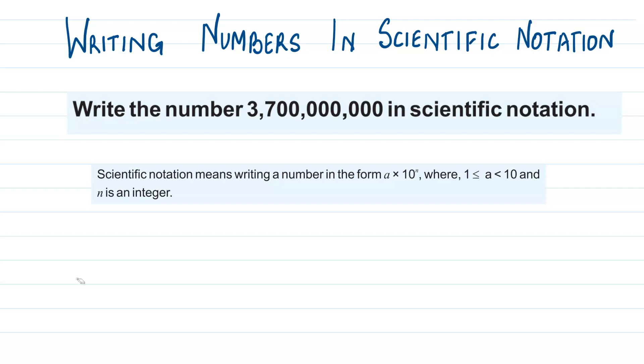Now let's understand what is scientific notation. Writing numbers in scientific notation means that we have to write numbers in the form a × 10^n, where a is a number and n is a power of 10, and this power of 10 means how many zeros are there in front of the number a.